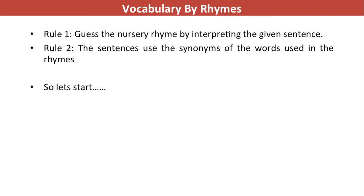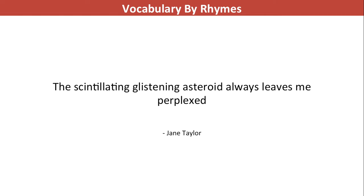We'll start with the first puzzle. The puzzle reads as: 'The scintillating and glistening asteroid always leaves me perplexed.' A small hint — it was written by Jane Taylor. You can pause the video and think about what scintillating, glistening, asteroid, and perplexed mean, and then try to identify which nursery rhyme this is.